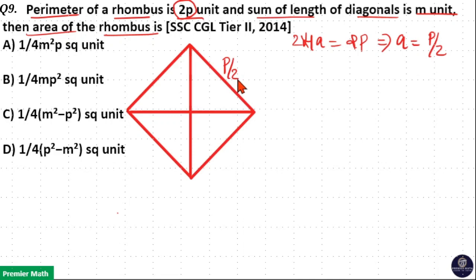So if a is equal to p by 2. In a rhombus the diagonals are considered diagonal 1 as d1 and diagonal 2 as d2. Then this d1 and d2 bisect each other at 90 degrees.